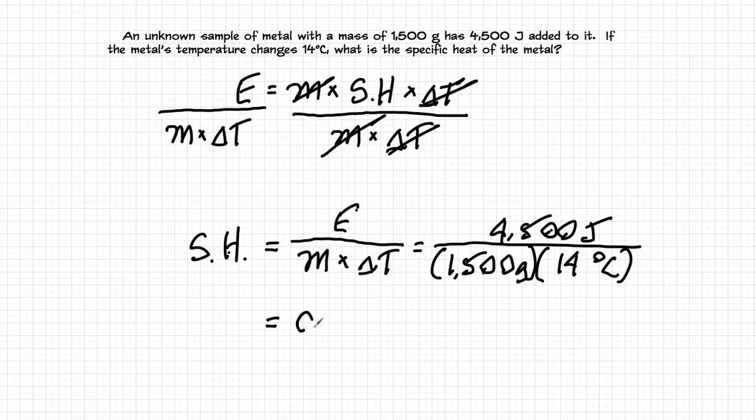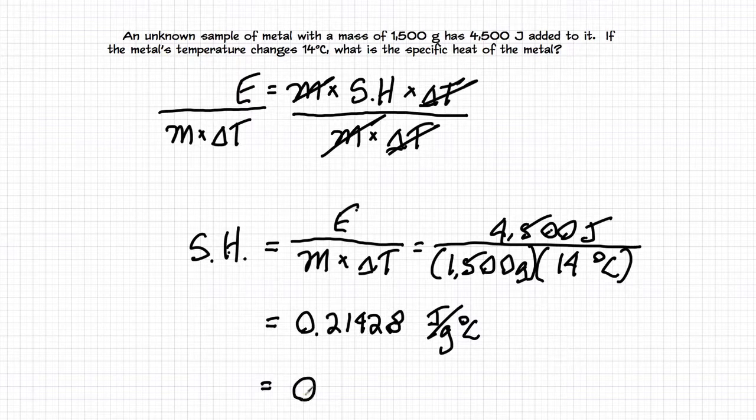And the number my calculator gives me is 0.21428 and so on. And that's in joules per gram degree Celsius. Now we've got to go back and consider sig figs. And if you look at the question, two sig figs is going to be all that we're allowed. And so the answer is 0.21 joules per gram degree Celsius. And that's our final answer.